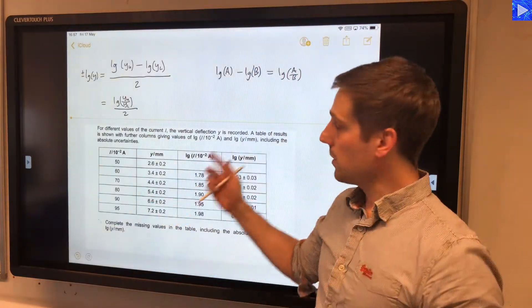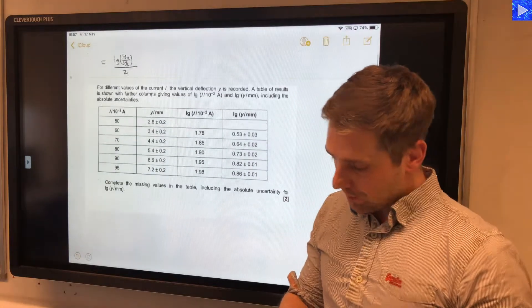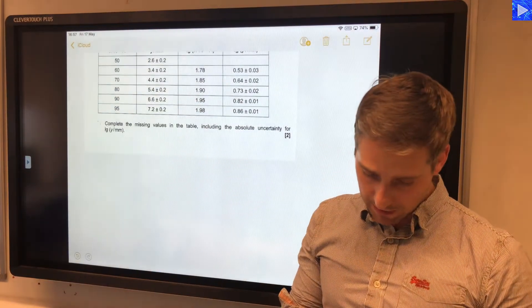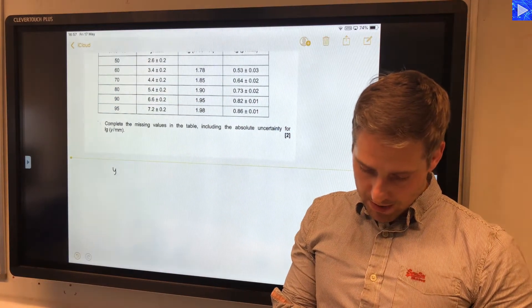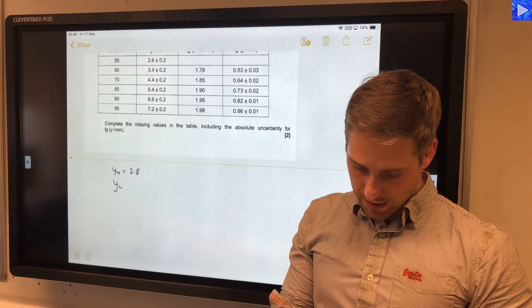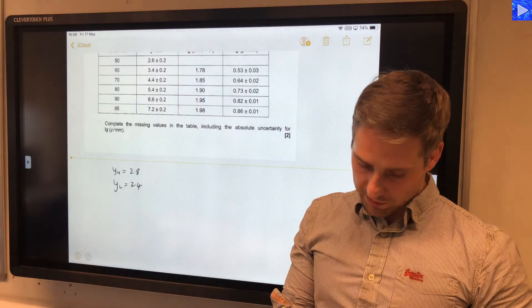So let's look at a couple of examples. The first one is this table here. I'm going to take my y here—it's 2.6 plus or minus 0.2 as we already noted. So y_upper is 2.8, y_lower is 2.4. So when I put this into my expression...